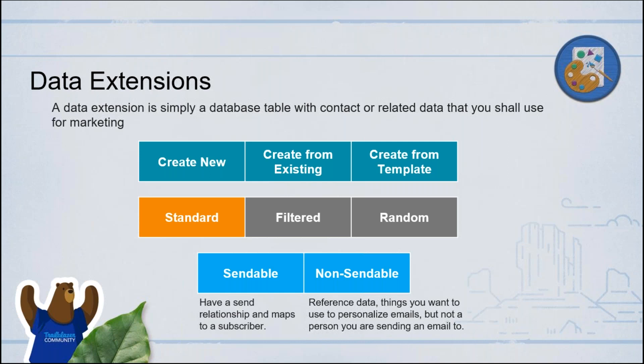When you create a data extension, you can also specify if it's sendable or non-sendable. A sendable DE means it has one or more contact records that you can send communication to through one of the channels. You can store related information about a contact on a non-sendable DE — for example, purchase data or order history. Some data is not the actual customer demographic information, but you may want to use it for personalizing your emails. You can store that in a non-sendable data extension.